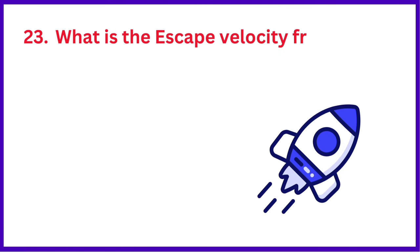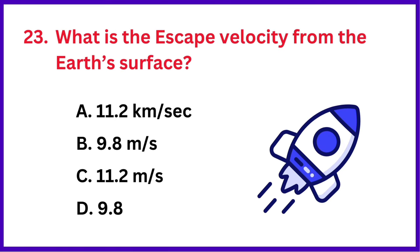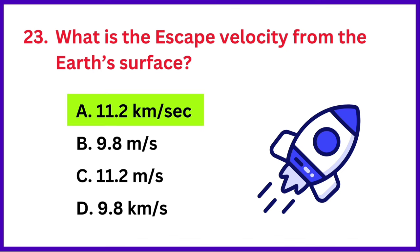What is the escape velocity from the Earth's surface? The correct answer is option A: 11.2 kilometers per second.